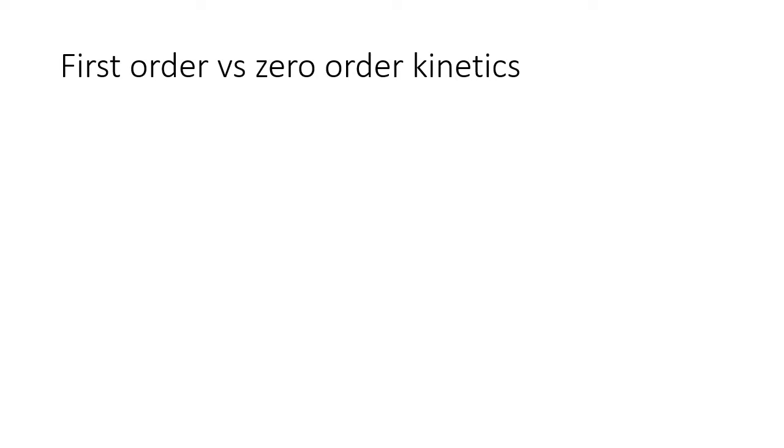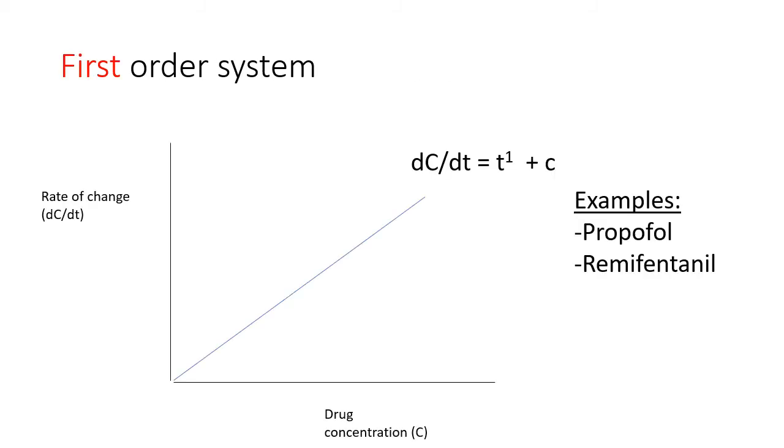Next, we will discuss the nature and differences between first-order and zero-order kinetics. What first-order means is that when we plot rate of change versus drug concentration, we see a line with a first-order exponent, that is T raised to the 1. Note that once the substrate concentration becomes high enough, the elimination system does become saturated and we will see zero-order kinetics.